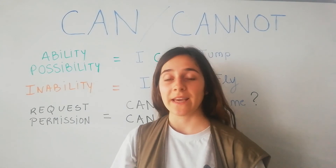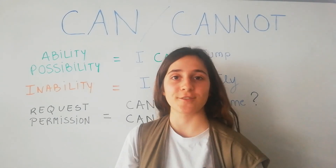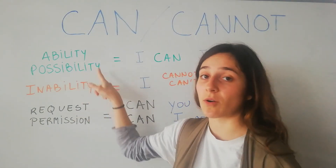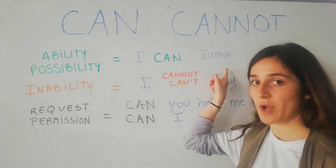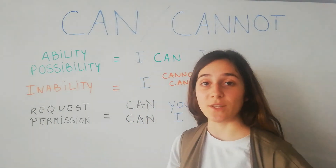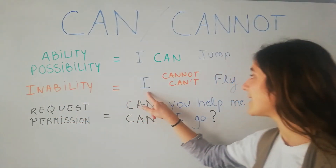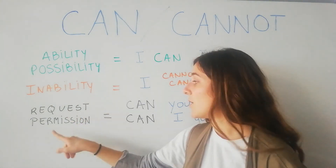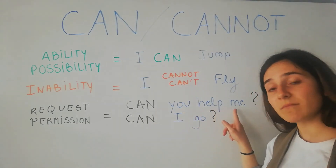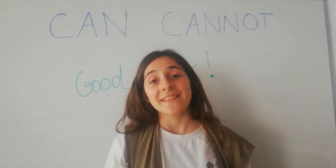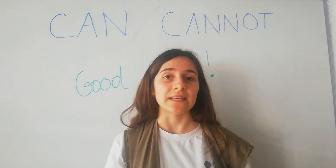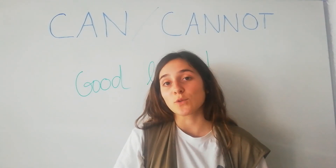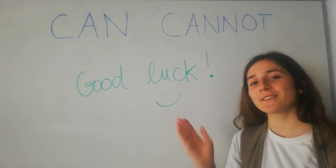Now let's recap and see how we can use can and cannot. We can use can and cannot for an ability or a possibility — I can jump. We also saw that we can use it for inability — I cannot fly. Then, for a question, request, demand, or permission: can you help me? Or can I go? Thank you for following the lesson. I will send you some exercises and documents that you can read to know more about how to use can and cannot. Good luck and see you soon!